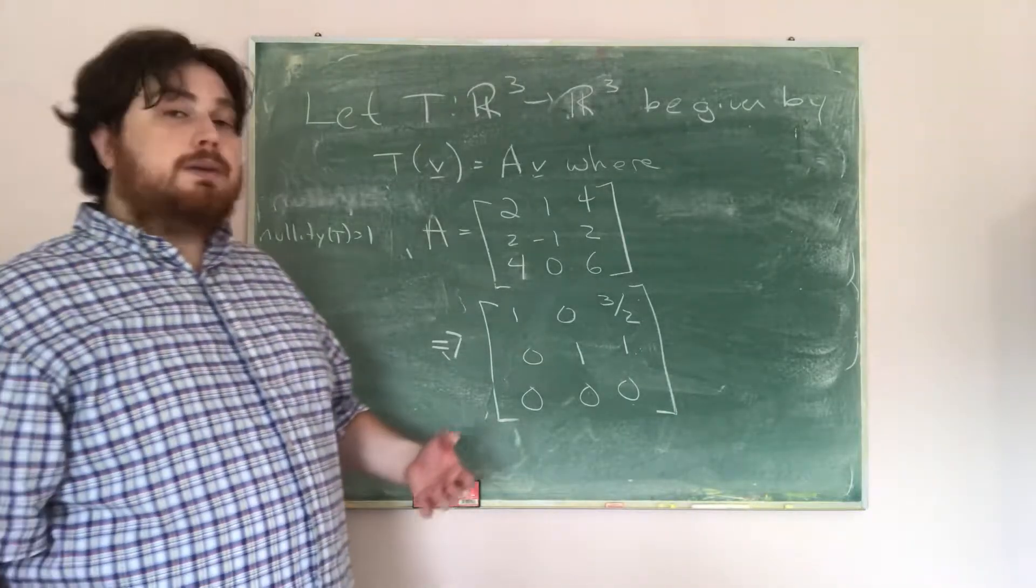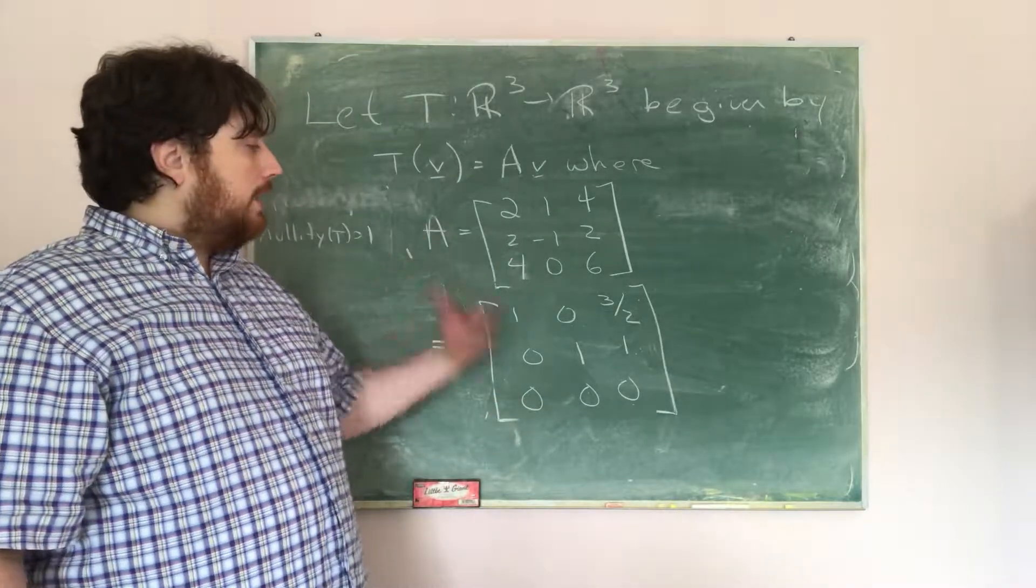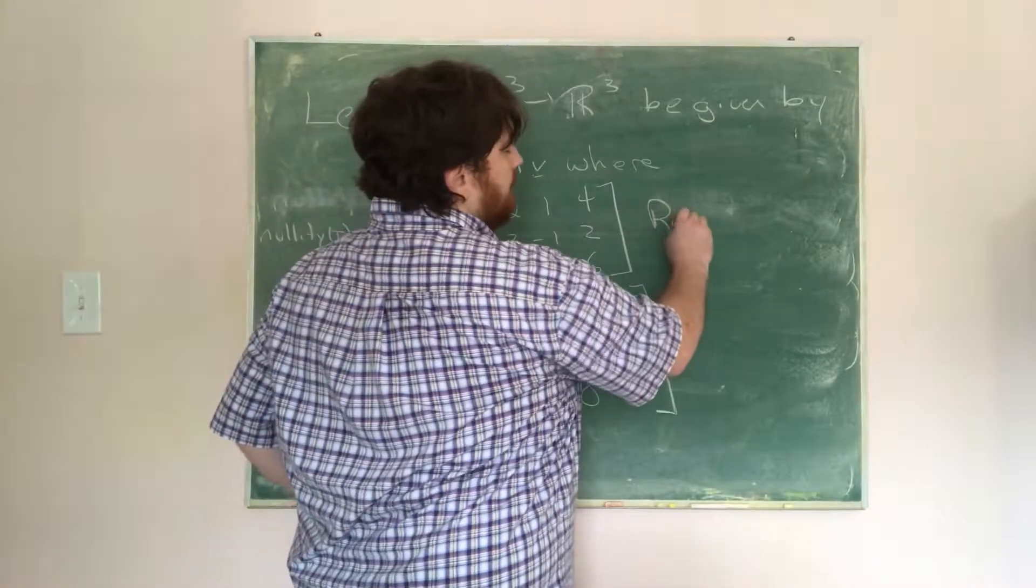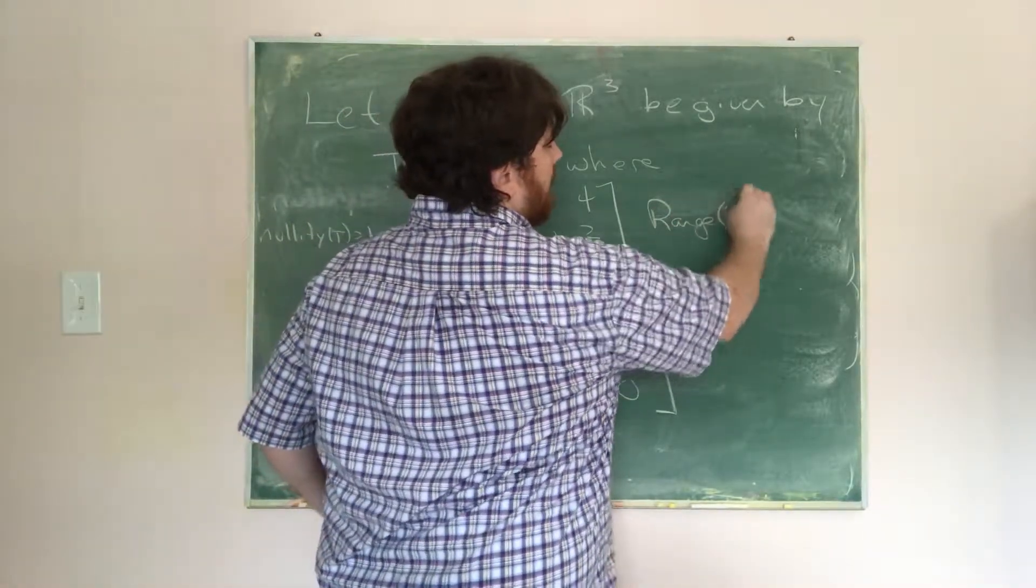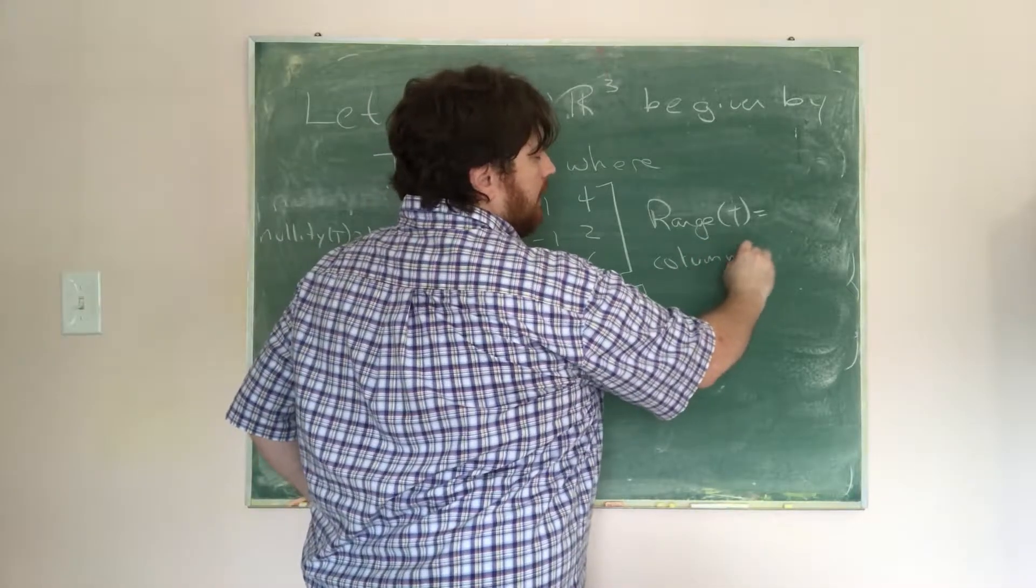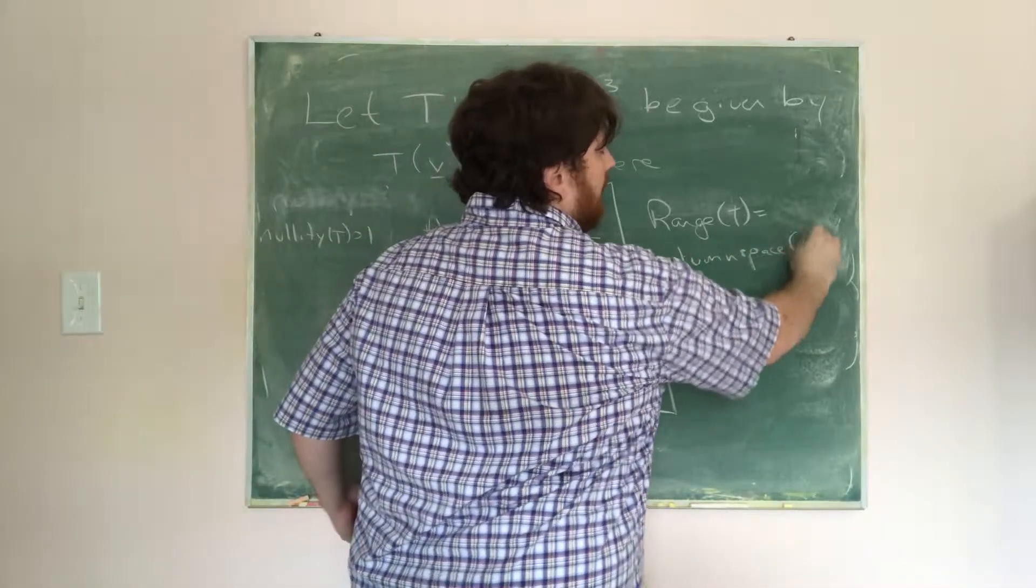So now in order to find the range of T, what we need to do is find the column space of the matrix A. So that is the range of T is just equal to the column space of A.